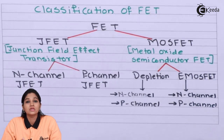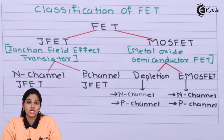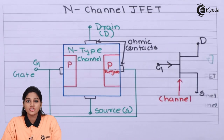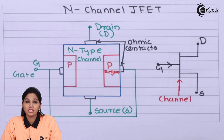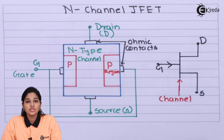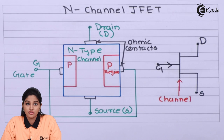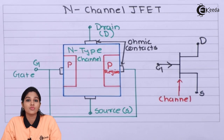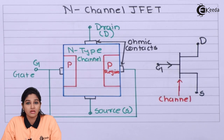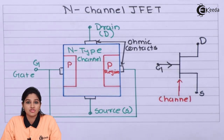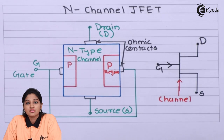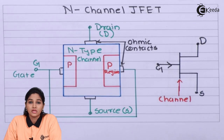Now let's see how the N-channel and P-channel JFET are constructed. N-channel JFET, as its name indicates, consists of an N-type semiconducting channel. FET consists of three terminals: drain, gate, and source.